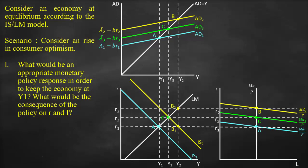The next part asks what an appropriate monetary policy would be to keep the economy at Y1. We want to decrease aggregate demand to offset the increase. So we decrease money supply, which results in a higher interest rate. Consequently, the LM curve shifts to the left, giving us lower output and higher interest. Higher interest results in lower investment, which we call the crowding out effect.